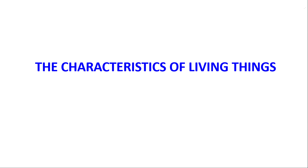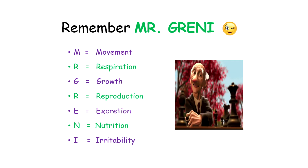Today's topic is about the characteristics of living things. We are going to look at the seven basic characteristics of living things — the features that make them living and separate them from the non-living. Once you do not have all of these characteristics, you are considered non-living. For example, a virus may have a certain number of these characteristics but not the entire grouping, hence they are classified as non-living.